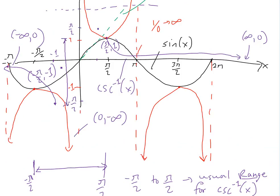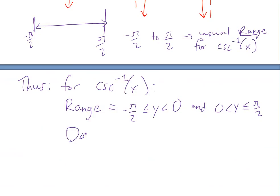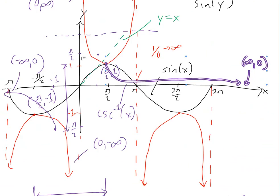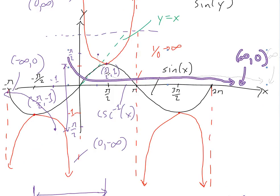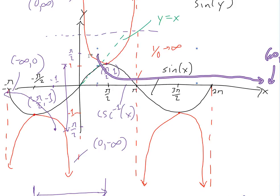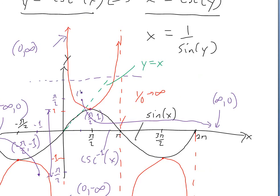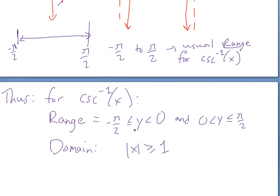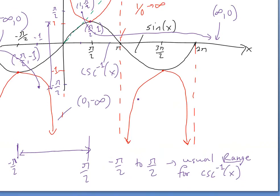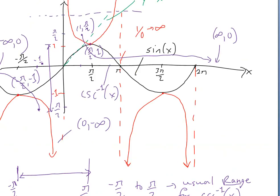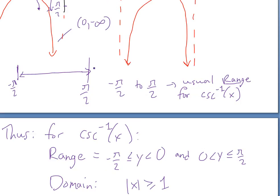The range is split into two intervals because of the horizontal asymptote at 0. There's also a correction — the point should be at (1, π/2). The domain of inverse cosecant is where |x| ≥ 1, because the function is not defined between x = −1 and x = 1. The absolute value must be at least 1 — it can be negative or positive, but its magnitude must exceed 1.